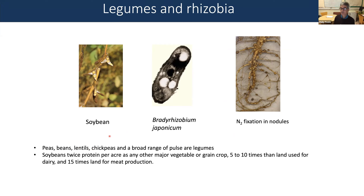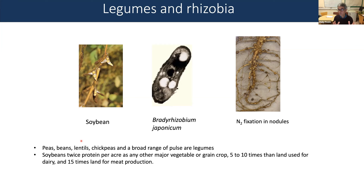What's really interesting in terms of agricultural use is that soybeans are able to produce twice the protein per acre of any other major vegetable or grain crop, five to ten times more than land used for dairy, and 15 times more than land used for meat production. They are super producers in terms of high-protein grain, and this comes from the fact they're able to fix their own nitrogen — the bacteria on their roots fix nitrogen into ammonia which the plants incorporate into protein.